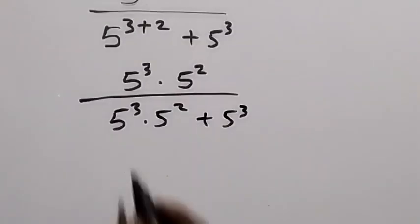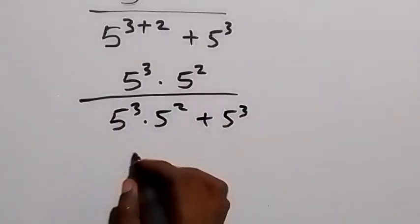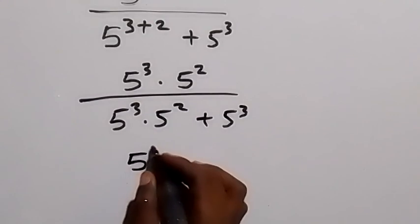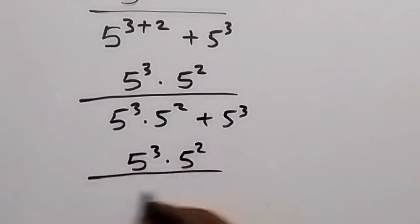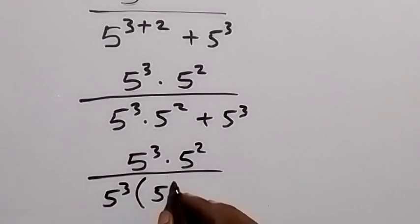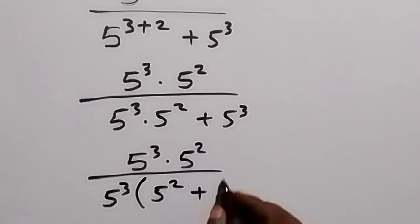Then from the denominator here we factor 5 raised to power 3 out. This will be 5 raised to power 3 times 5 raised to power 2, divided by 5 raised to power 3 into bracket 5 raised to power 2 plus 1.